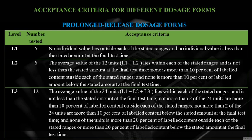Example: In one hour, release range is 10–30% from prolonged-release dosage form. At L1 level, six units are taken and no individual value lies outside the stated range. If any are outside, L2 level is applied: six more units tested; average of 12 units must lie within the stated ranges. At L2, none may be more than 10% above or 10% below the stated range — so for 10–30% range, no unit may go outside 0–40%.